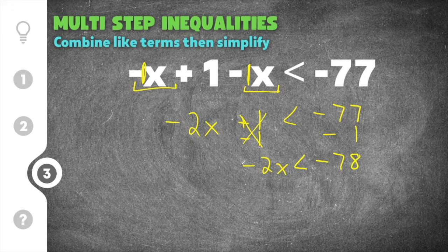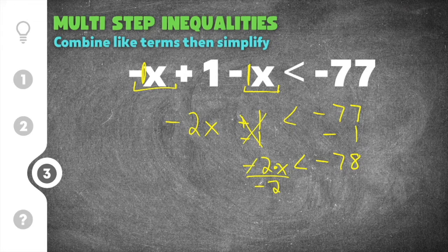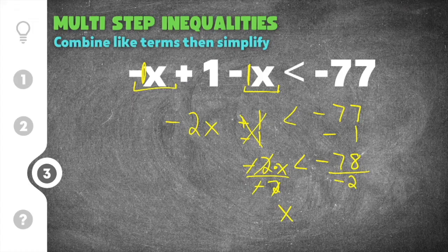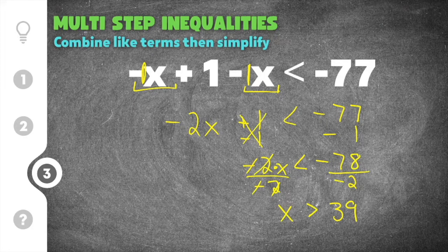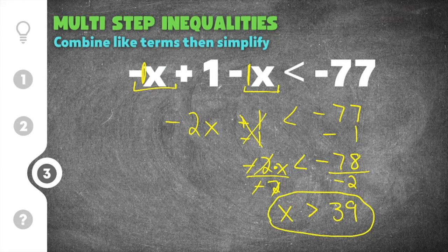Now we have to get rid of the coefficient on x. This is like saying negative 2 times x, so I have to undo this negative 2 by dividing by negative 2. The negatives cancel and the 2's cancel, leaving just x on the left. We also have to divide the right side by negative 2. Negative 78 divided by negative 2 is positive 39. Now the last step unique to inequalities: when you divide or multiply by a negative number the sign in the middle flips. This is a less than sign, so it's going to change to a greater than sign because we divided by a negative 2. So x is greater than 39 is the solution to this multi-step inequality.